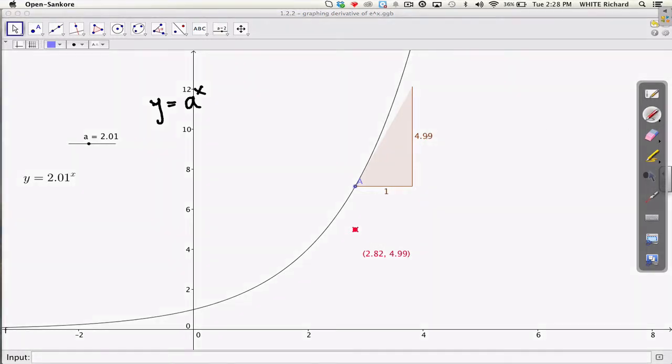So you can see here that the slope, which is just rise over run, run is 1, is being graphed right here, is this point's y value. So we're graphing the derivative at every single point.